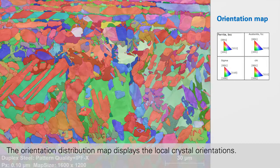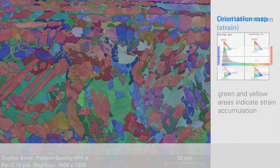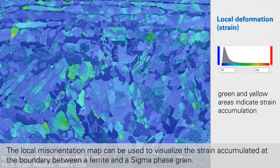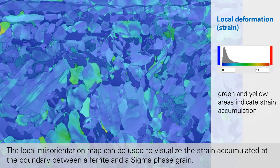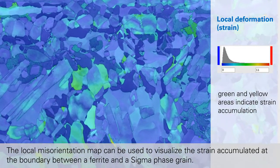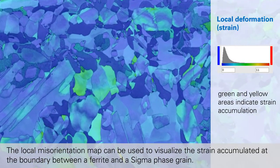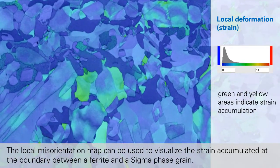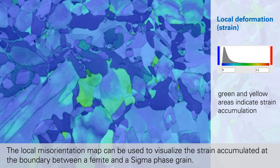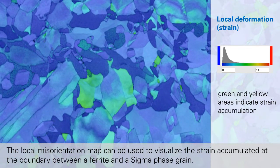The local misorientation map can be used to visualize the strain accumulated at the boundary between a ferrite and a sigma phase grain. In this example, the green and yellow areas indicate the strain accumulation.